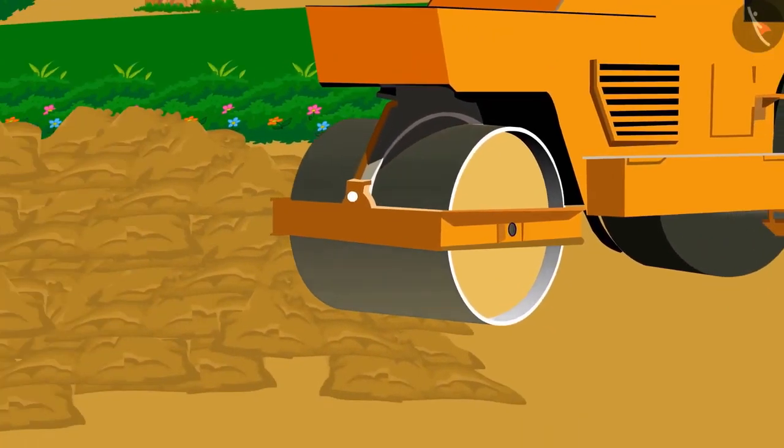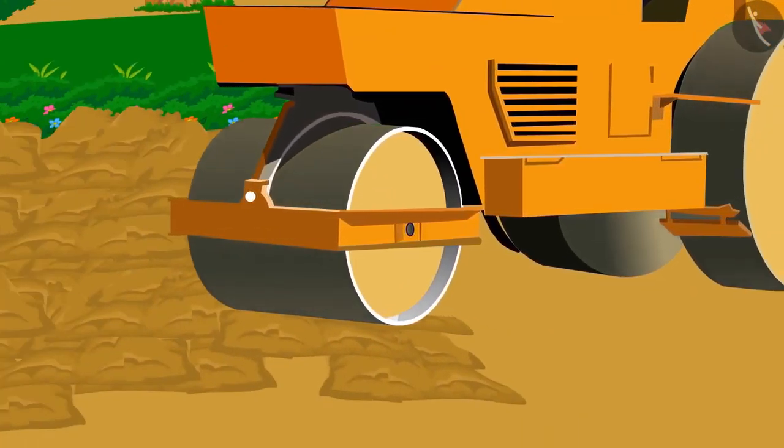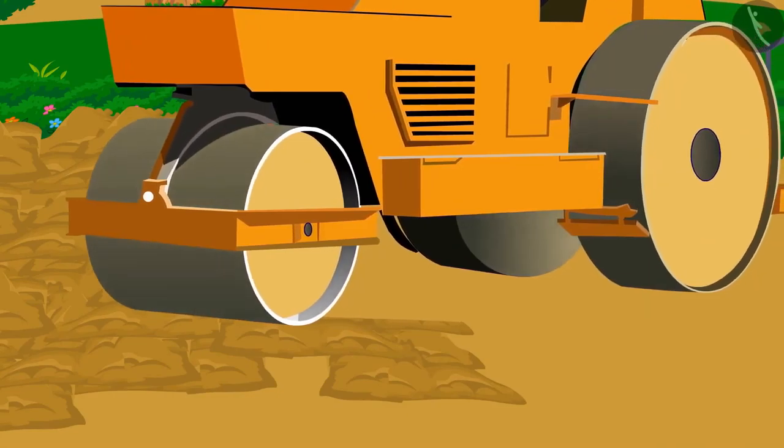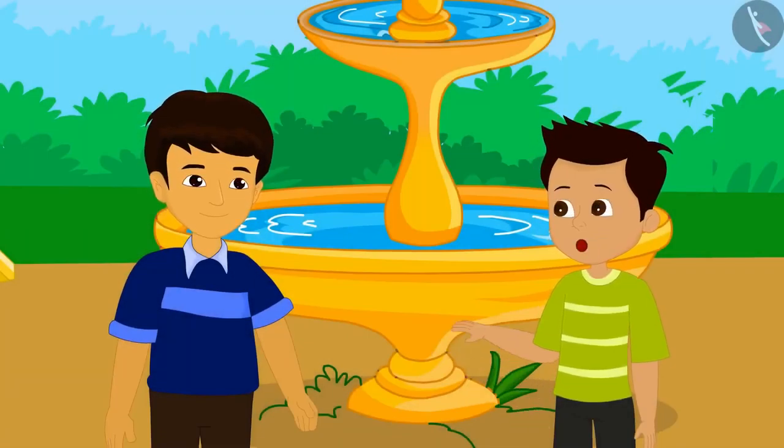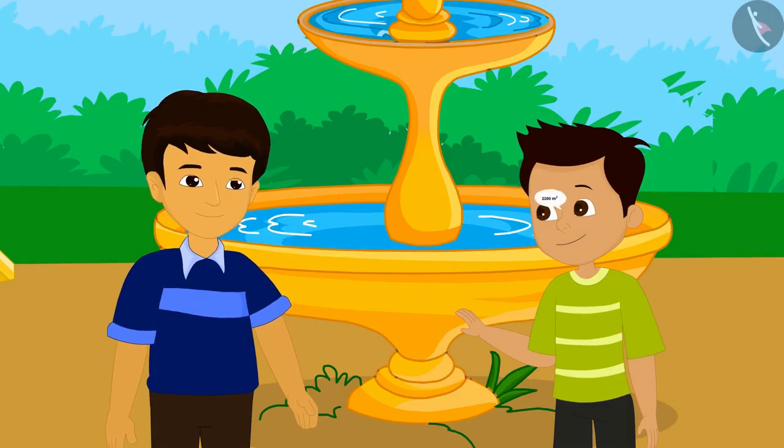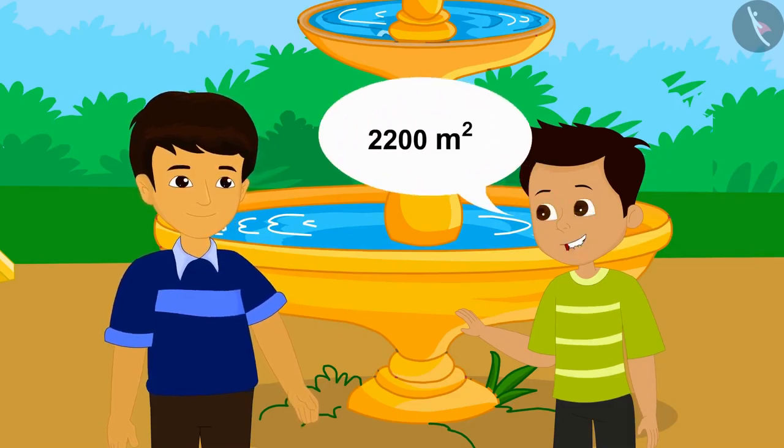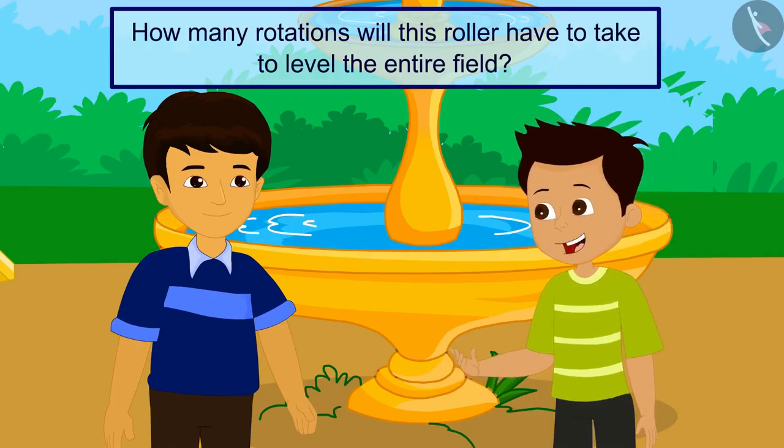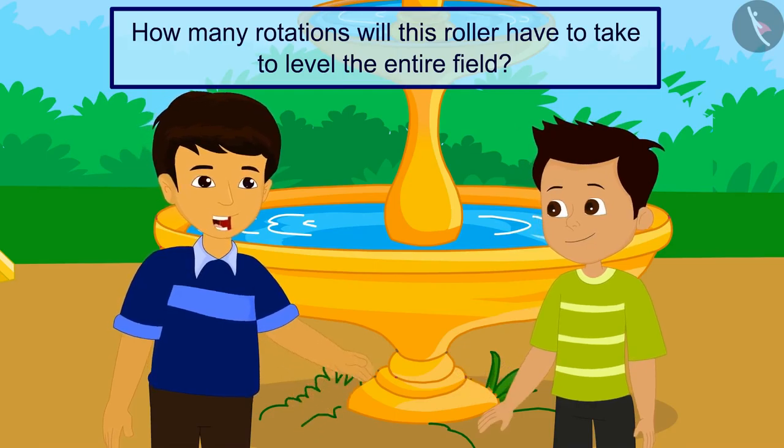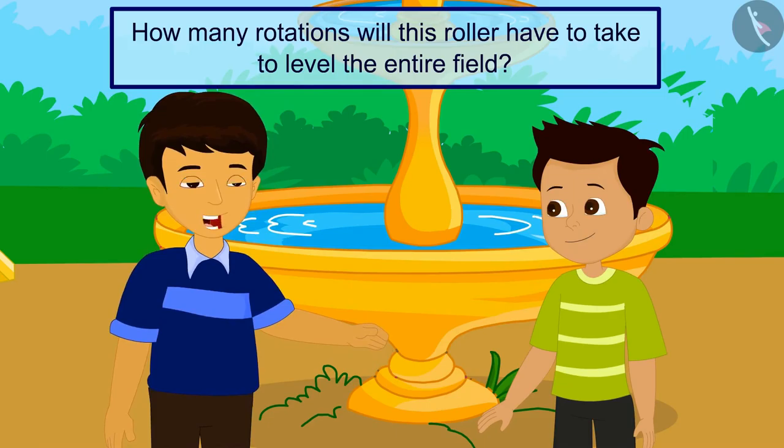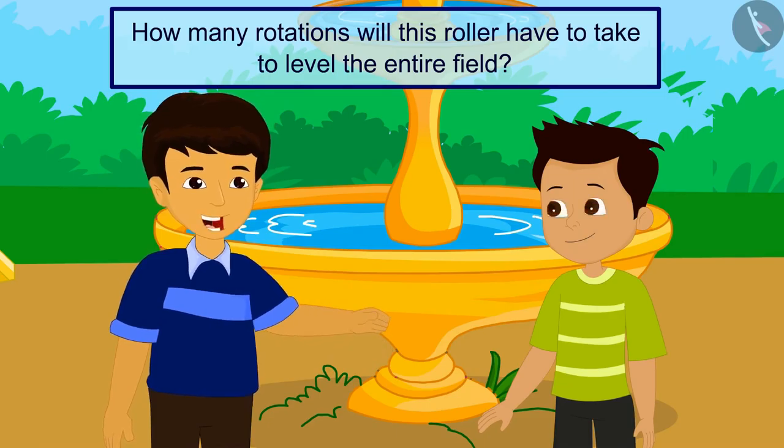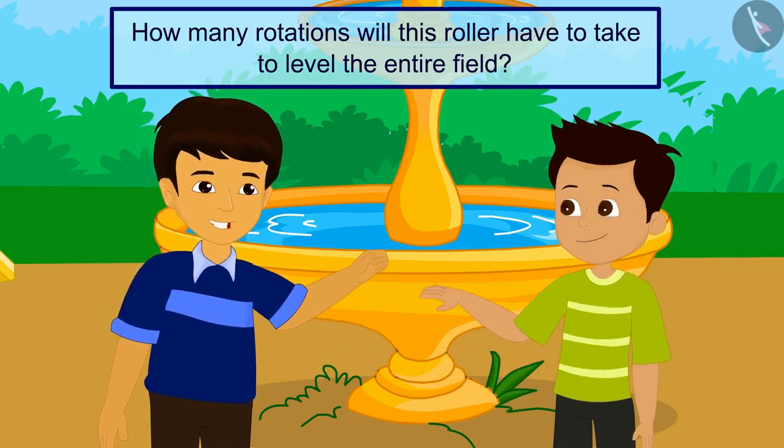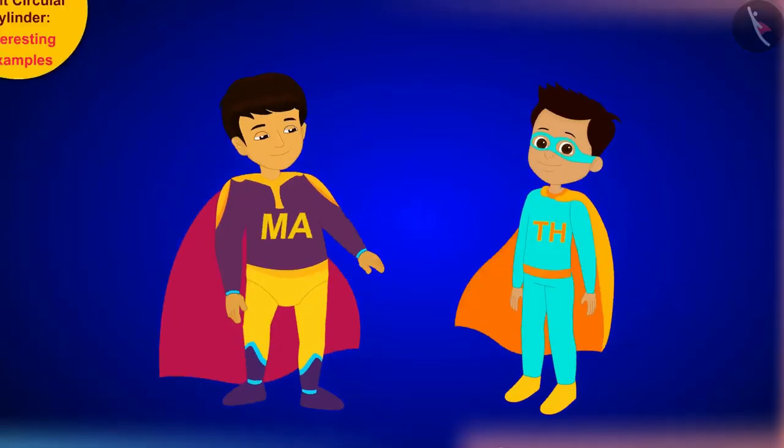Manas, let's go play in the playground! Yes, let's go! Hey, what is this? There is some construction work going on on the playground. Yes, look how huge this road roller is. It is being used to level the playing field. The area of the ground is 2200 square meters. Then how many rotations will this roller have to take to level the entire field?